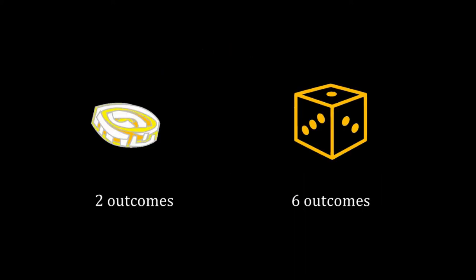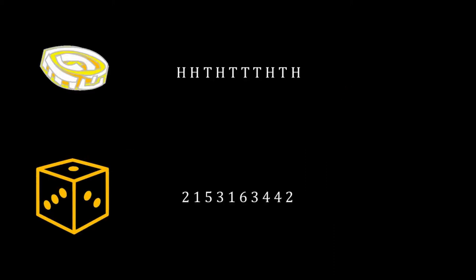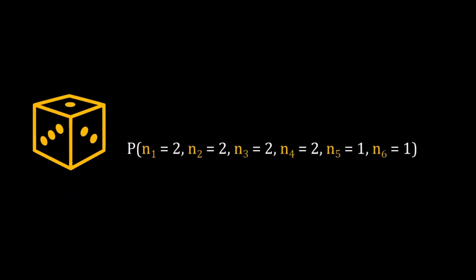A coin toss is binary — head or tail. Now replace the coin with a six-sided die, which has six possible outcomes. Throw the die ten times; suppose we got one, two, three, and four twice each, and five and six only once. What is the probability of this result? This problem is similar to binomial but with six outcomes per trial, so there must be a discrete distribution similar to binomial — that distribution is called the multinomial distribution.